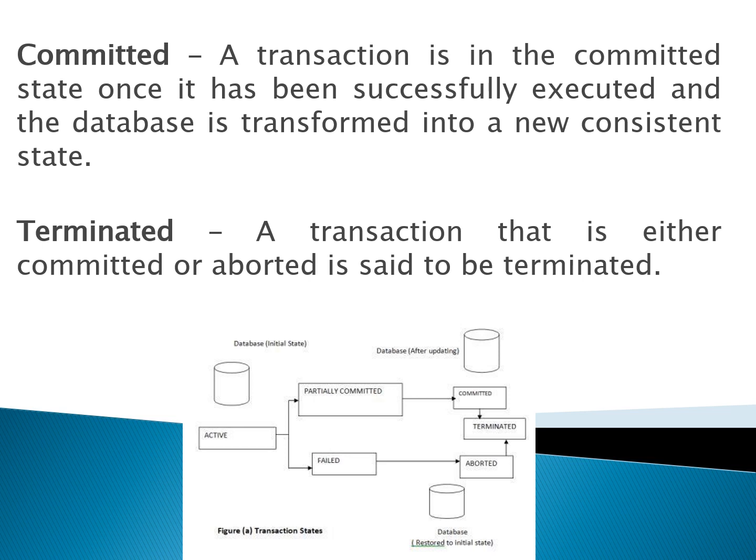Committed state: a transaction is in the committed state once it has been successfully executed and the database is transformed into a new consistent state. From the active state, it comes to partially committed where it executes the final statement. Once successful, it moves to the committed state, and the database is updated with the changes that occurred due to the transaction.